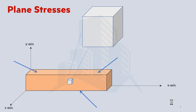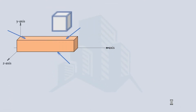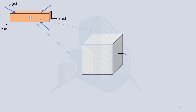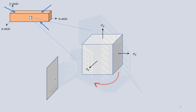Those stresses could be normal stresses and shear stresses. The normal stress in the x direction is sigma x, in the y direction sigma y, and in the z direction sigma z. There will also be shear stresses acting on these planes. The plane normal to the x-axis is the x-plane, and the plane normal to the y-axis is the y-plane.